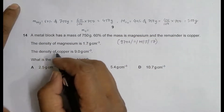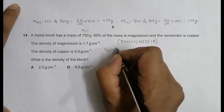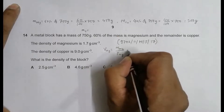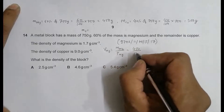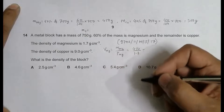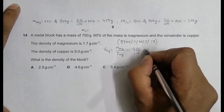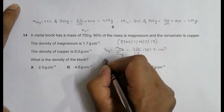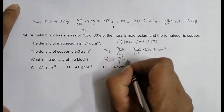Now with the densities, we find their volumes. The volume of magnesium is equal to mass of magnesium divided by rho of magnesium, where rho is the density. That's equal to 450 divided by 1.7, which equals 264.7 cm³.